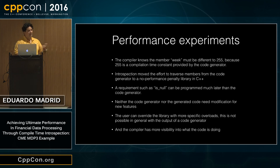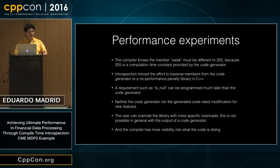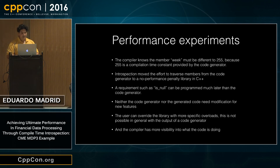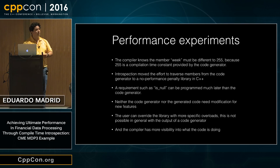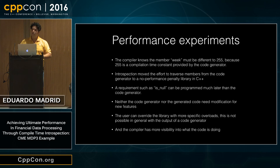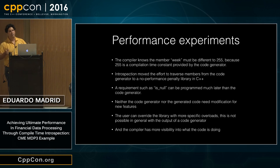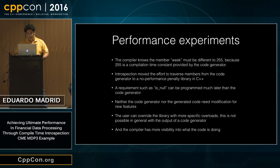We can program 'is_null' at any time — it wasn't there when we programmed the code generator. You can extend things regardless of the code generator without modifying either. You can override this library with overloads of your own for your own types or specification types where you want different behavior. If you were using a code generator without any generality or metaprogramming, it would have overloads for each specific type, preventing you from overloading again. The compiler also has more visibility into what's going on.